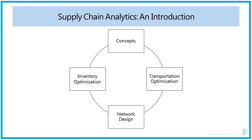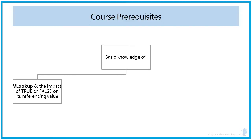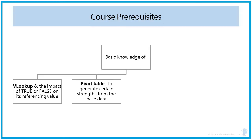Before going into detail of those topics, we are going to see what the prerequisites for this course are. We require basic knowledge of the following components. The first is basic Excel functions like VLOOKUP, including the impact of true or false on referencing values in VLOOKUP, and then PIVOT tables — how to use them to generate certain strings and consolidate values from the base data.